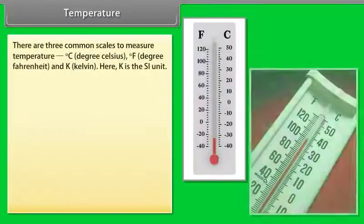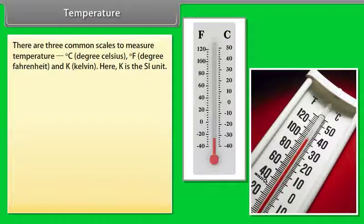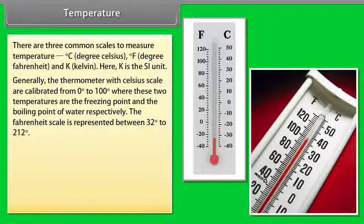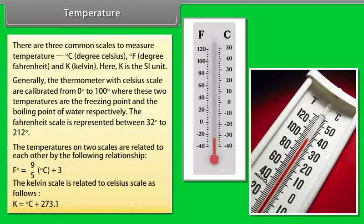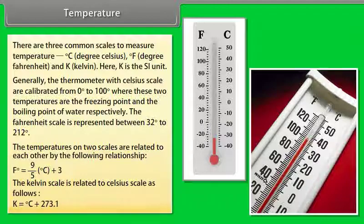There are three common scales to measure temperature: Degree Celsius, Degree Fahrenheit, and Kelvin. Here, K is the SI unit. Generally, the thermometer with Celsius scale are calibrated from 0° to 100°, whereas these two temperatures are the freezing point and the boiling point of water respectively. The Fahrenheit scale is represented between 32° to 212°. The temperatures on two scales are related to each other by the following relationship: °F = 9/5(°C) + 32. The Kelvin scale is related to Celsius scale as follows: K = °C + 273.15.